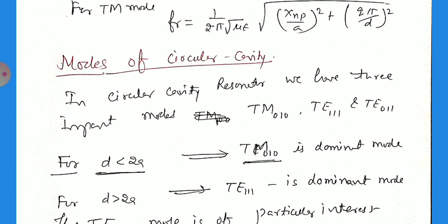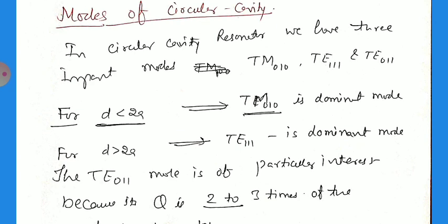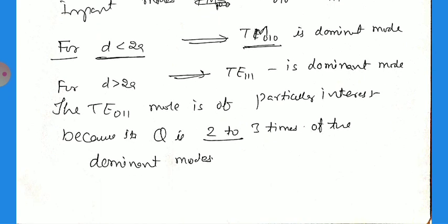In the circular cavity resonator, we have three important modes: TM_010, TE_111, and TE_011 modes. For d less than 2a, if the distance between the two plates is less than its diameter, then TM_010 is the dominant mode. If d is greater than 2a, then TE_111 is the dominant mode. The TE_011 mode is of particular interest because the Q for this one is 2 to 3 times that of the other two modes.